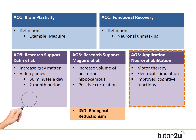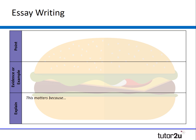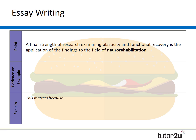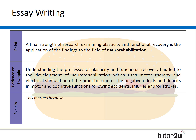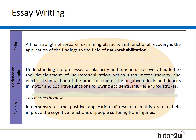Finally, let's take a look at our strength, which is the positive application of functional recovery research to the area of neurorehabilitation. We might say: a final strength of research examining plasticity and functional recovery is the application of the findings to the field of neurorehabilitation. Understanding the processes of plasticity and functional recovery has led to the development of neurorehabilitation, which uses motor therapy and electrical stimulation of the brain system to counter the negative effects and deficits in motor and cognitive functions following accidents, injuries, and even strokes. This matters because it demonstrates the positive application of the research to improve both cognitive and behavioural functions of people suffering from injuries.